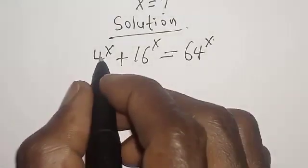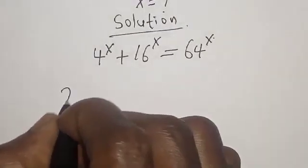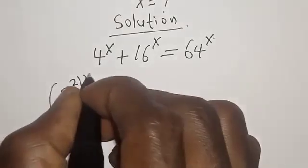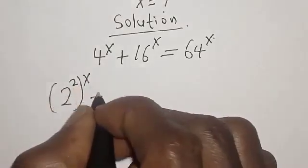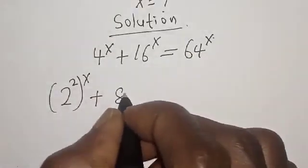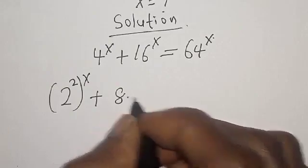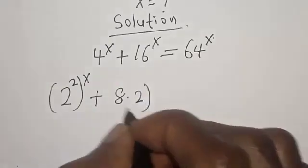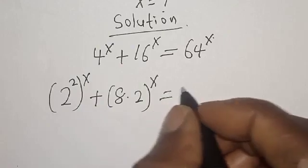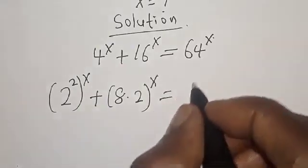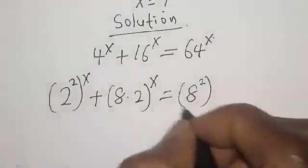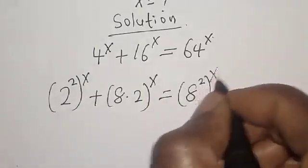4 raised to power s is 2 squared raised to power x, plus 16 is 8 multiplied by 2 raised to power x, is equal to 64, which is 8 squared, raised to power x.